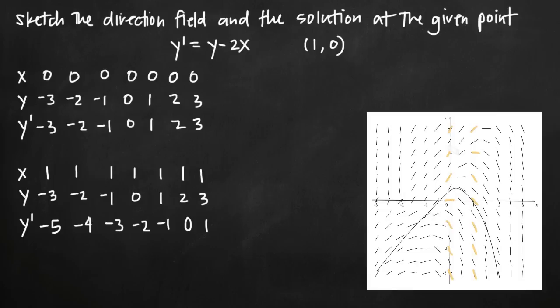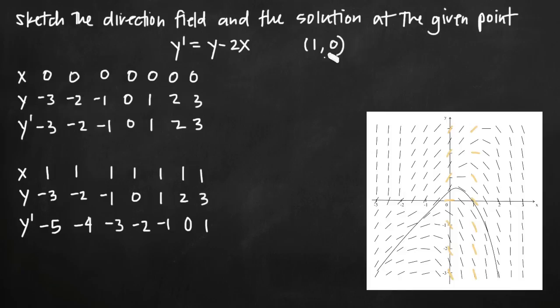You continue working through the direction field in the same way, making charts for x equals two, three, then x equals negative one, negative two, and negative three, at each of these values for y from negative three through positive three, and sketch the direction field that way. If you don't see a clear picture emerging, you may want to take smaller intervals — for example, intervals of one half — so not only sketching lines for integers but also for one half, three halves, five halves, etc. The smaller the intervals for both x and y, the more accurate a picture you'll see.